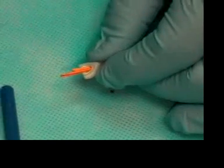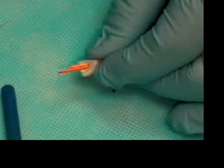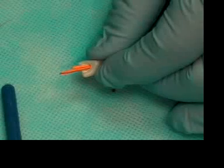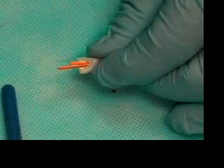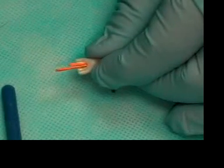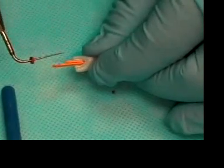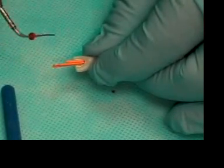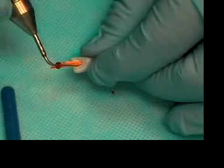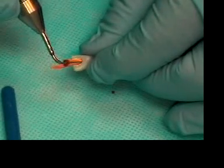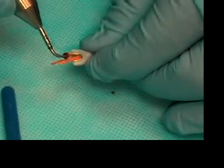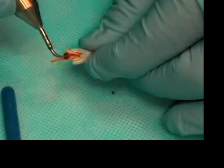Now at this stage, we'd be using the spoon, the Glick spoon made cherry red hot. In this case, I'm going to be demonstrating the use of what's called a System B. The System B is a combination heat carrier and plugger, but basically it's a heat source. If this was the spoon, we'd sear off down the orifice of the canal.